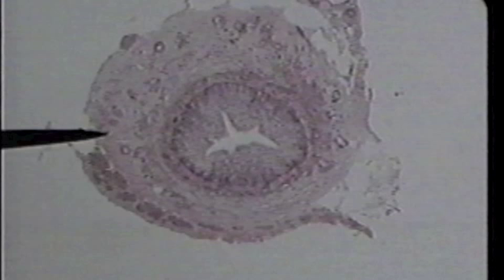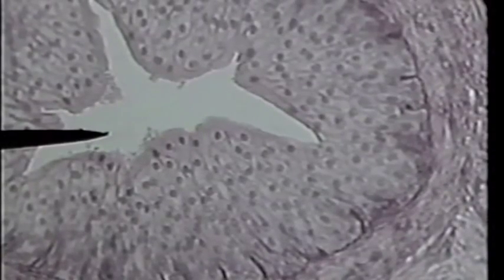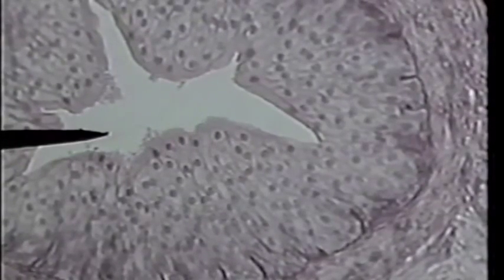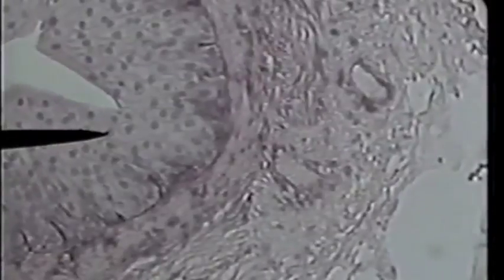On low power you can't see too much. We are about to go to high power. We're now looking at transitional epithelium on high power. The tip of the pointer is in the lumen of the transactional cut through the ureter.